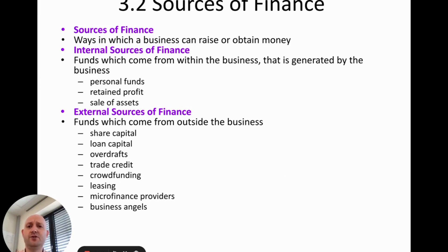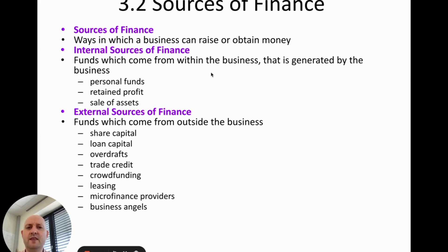Let's first define the term 'sources of finance.' A source of finance is basically any way in which a business can raise or obtain money. We'll break these down into internal and external. The three internal ones are personal funds, retained profit, and sale of assets — funds that come from within or are generated by the business. External sources are funds that come from outside the business, such as outside investors.